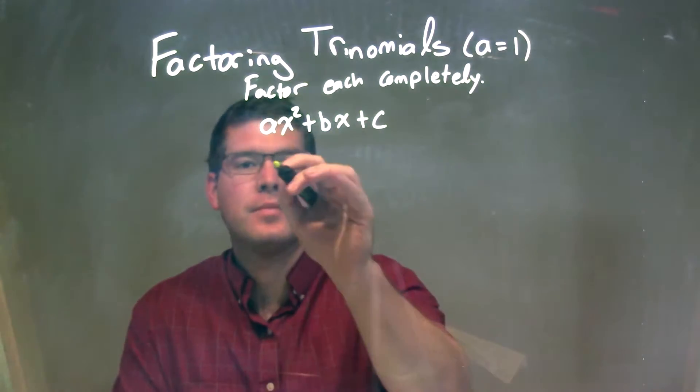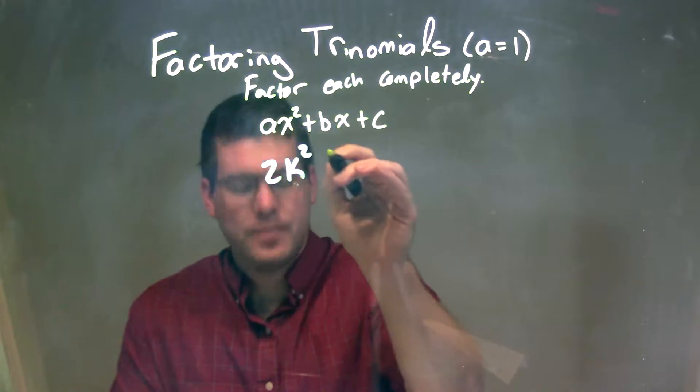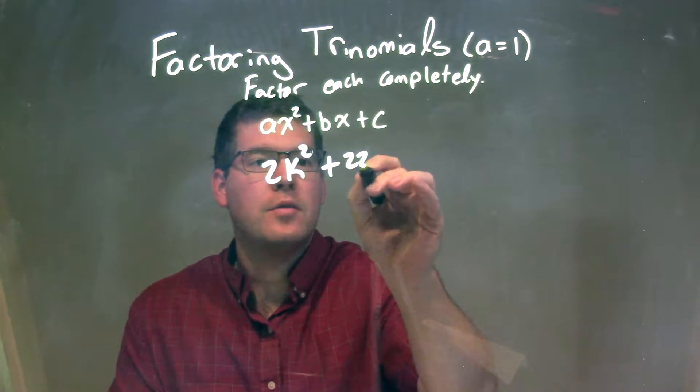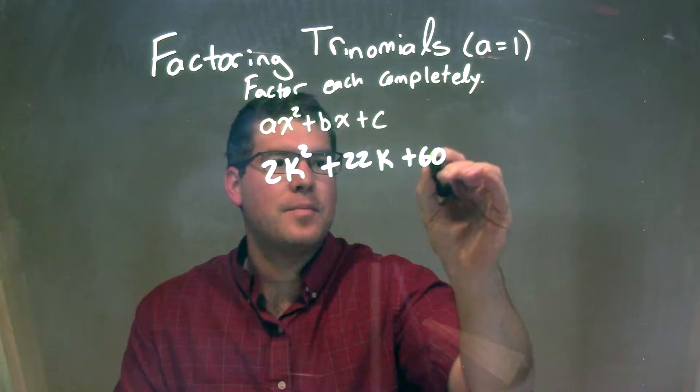We're going to factor each completely. So if I was given this trinomial 2k squared plus 22k plus 60.